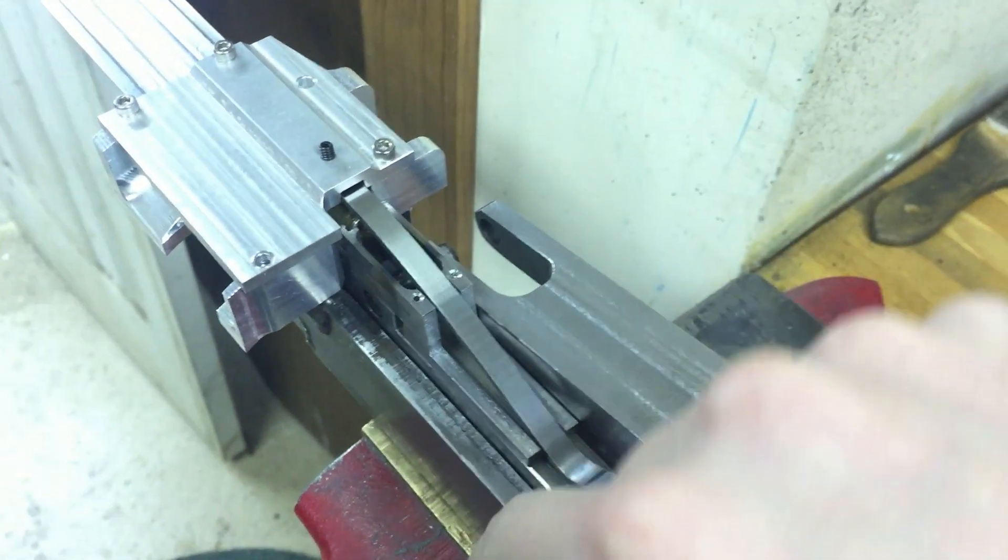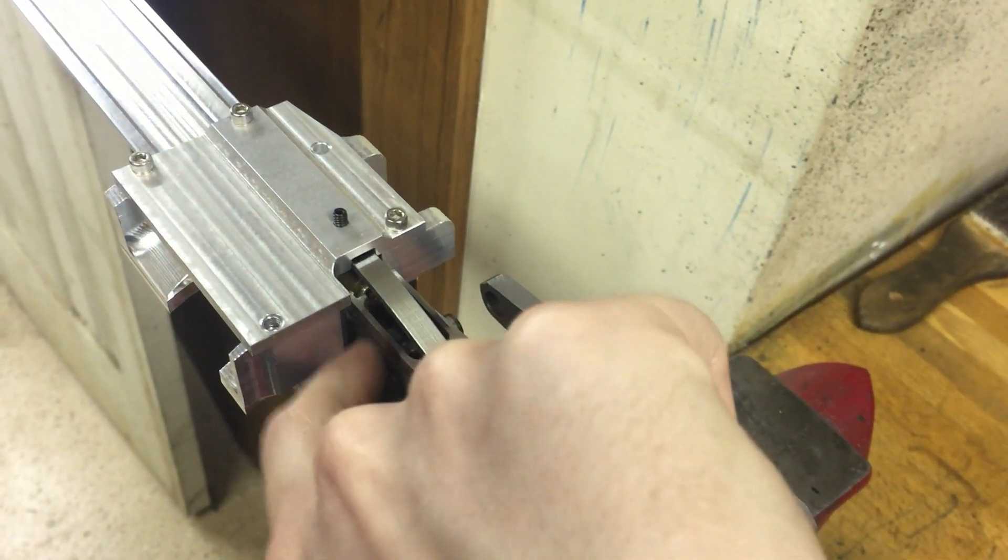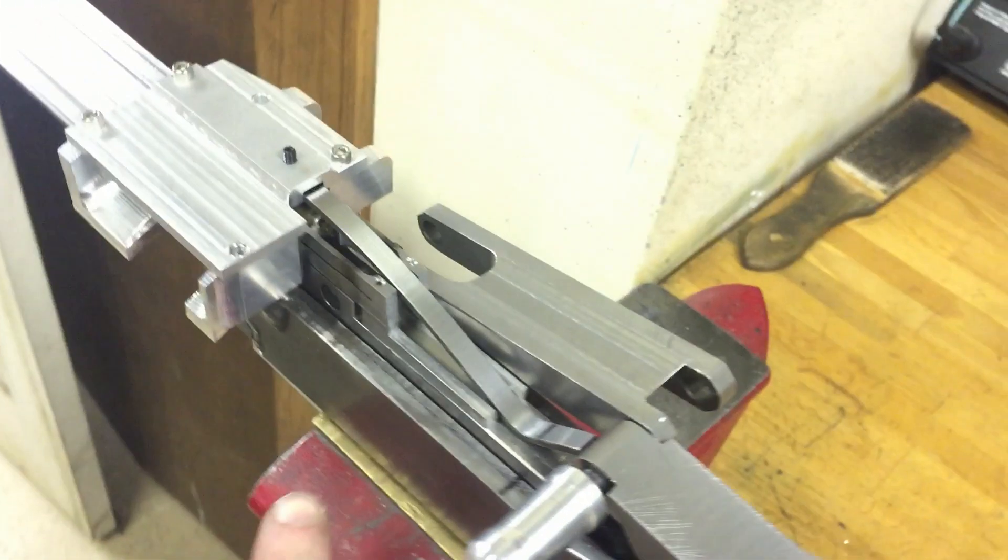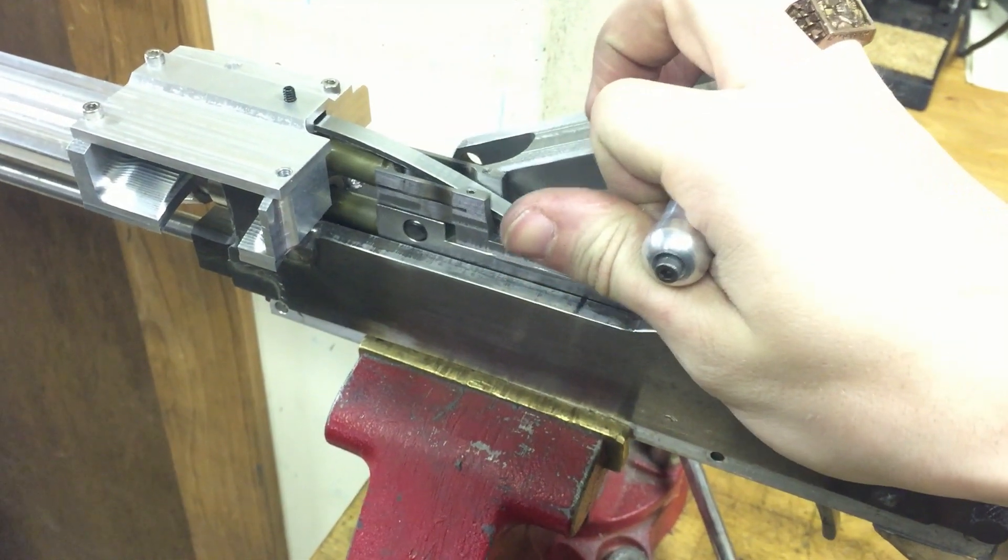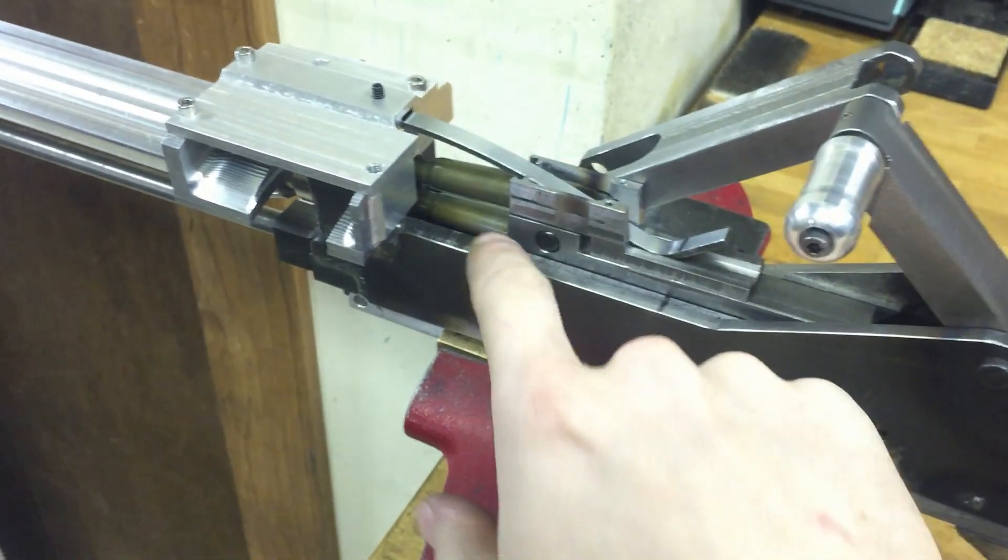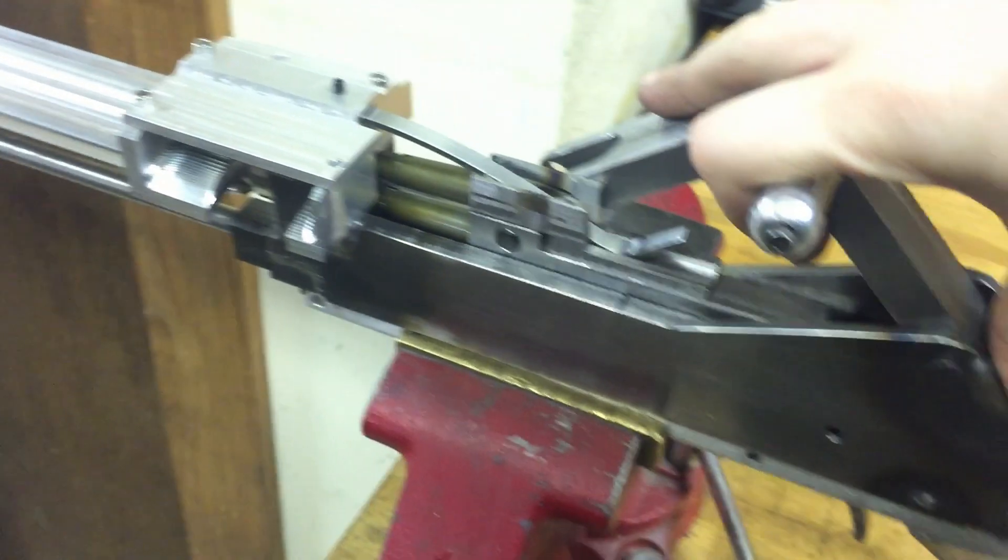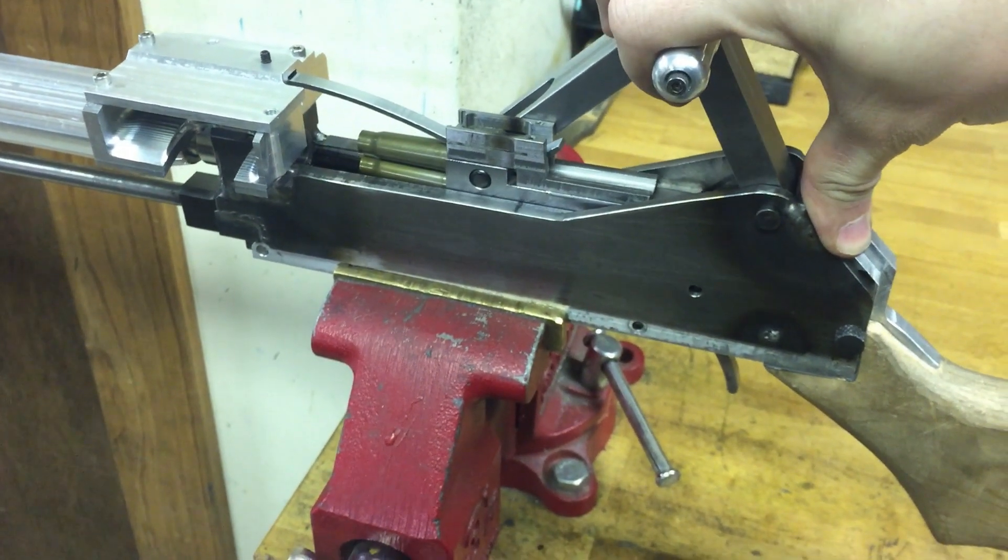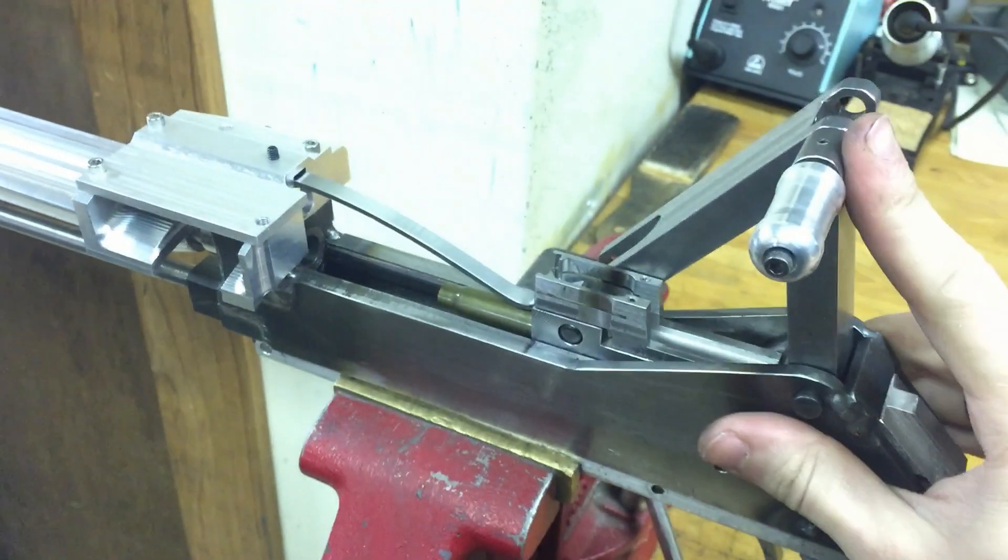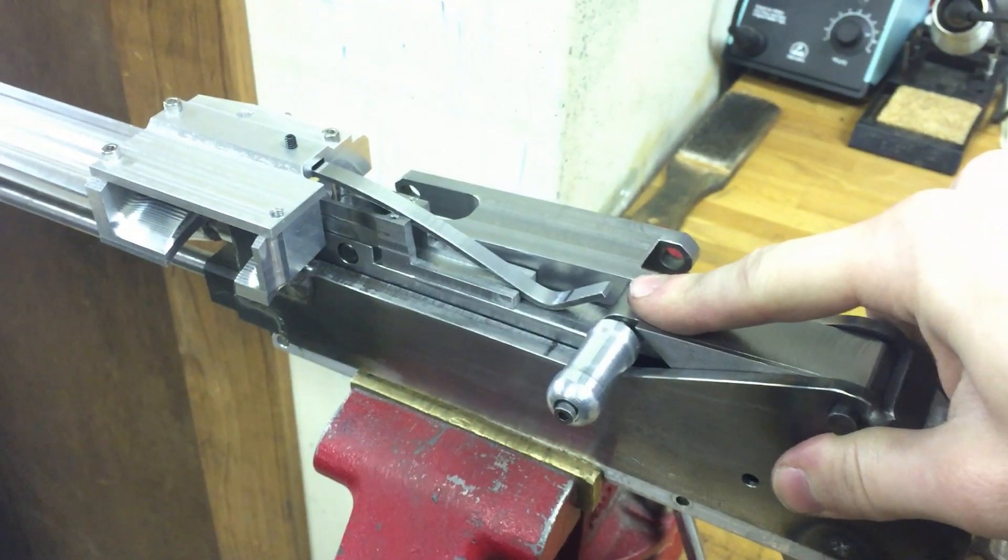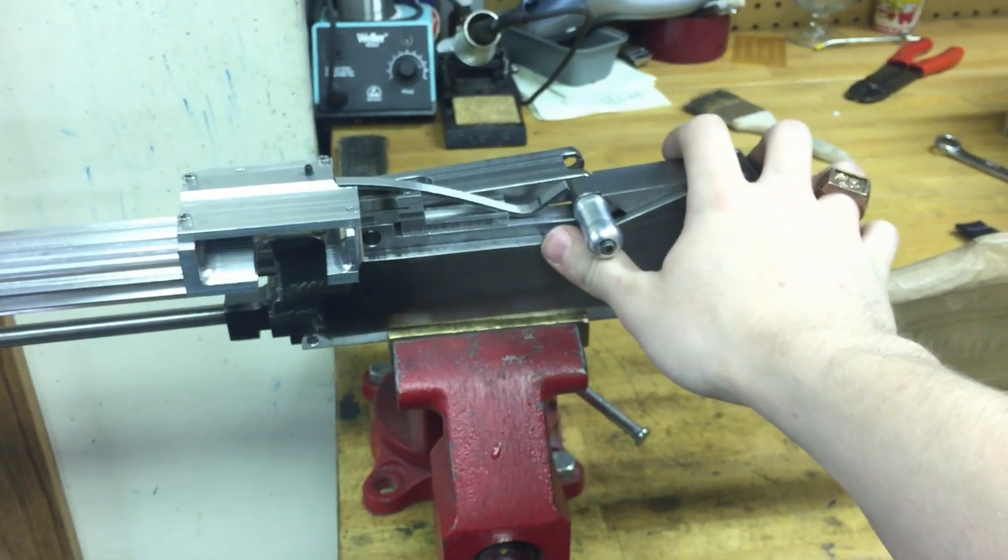This spring right here, as the action cycles, will push that down the feed rails and also eject the previous case. So I'm going to do it slowly here. There's what would have been the fired shell. This would be the new shell being pushed down this spring. And then it pushes the old case out of the way. This new one is in position to be chambered. And it just continues to repeat.